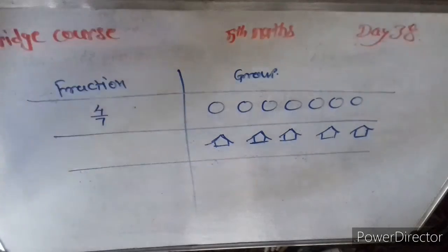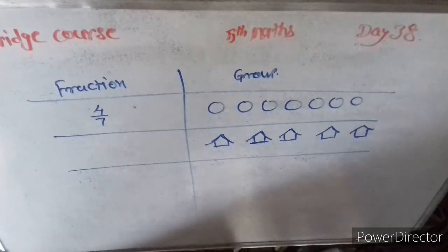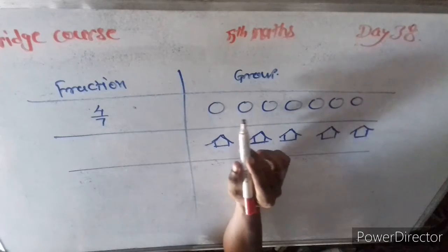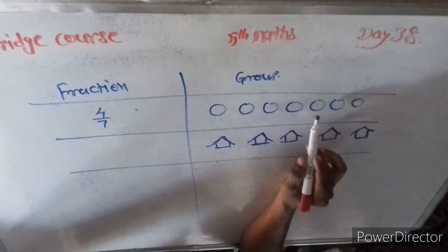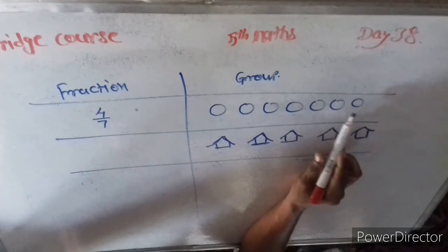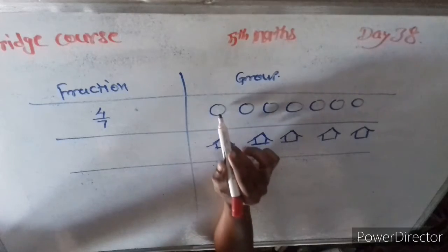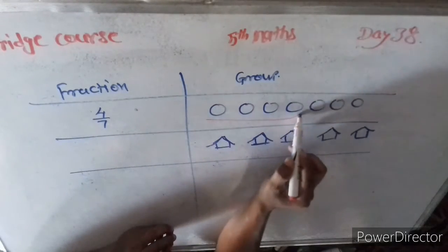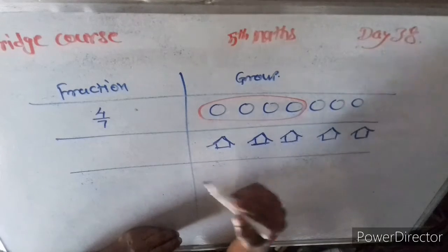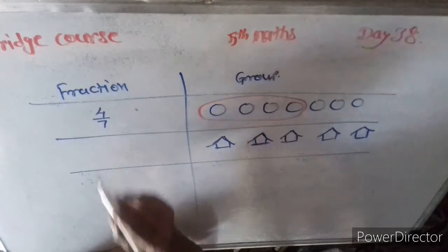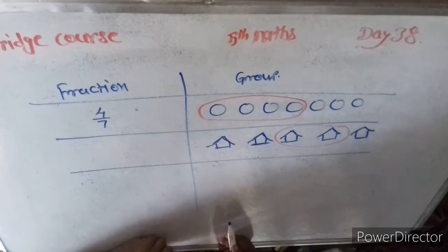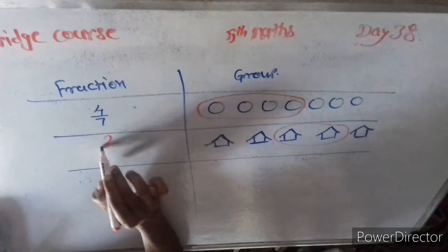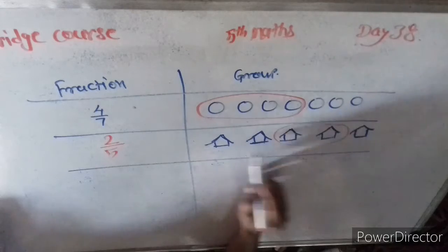Now they are given here some groups and fractions. The group showing four by seven means seven balls given here: one, two, three, four, five, six, seven. And four balls get a circle around us. So four by seven. Now, they given the circle of two houses. So we write two by five because total house five.